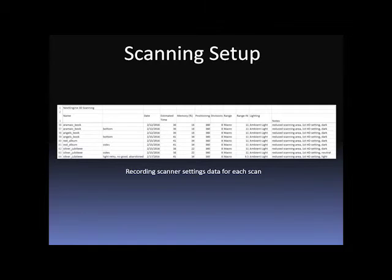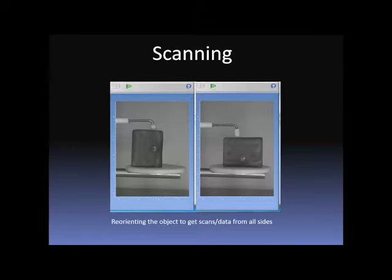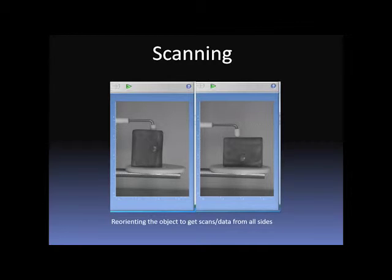Each scan took approximately 40 minutes for eight divisions. A three-division bracket took about 15 minutes. After the first 360-degree turn, you rotate the object approximately 90 degrees so any missed data becomes visible to the scanner during the second pass, for a total of 80 or more minutes per object.